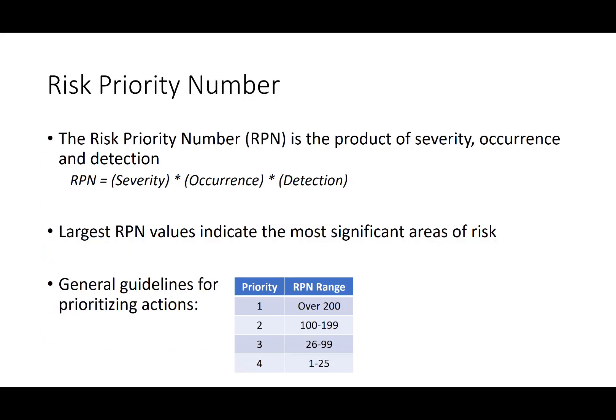The risk priority number assesses the risk by taking the components of severity, occurrence, and detection, and multiplies the three factors together into one combined number. The largest RPN values indicate the most significant areas of risk. A general guideline for prioritizing actions is that the highest priority items should be anything over 200. 100 to 199 is typically your second priority, and 26 to 100 or 1 to 25 are your third and fourth priorities. A score of 1 to 25 is extremely low risk and usually does not require significant effort, while anything over 200 is considered exceptionally high risk and cannot move forward without some sort of mitigating action to reduce that level of risk.